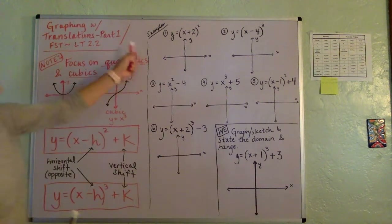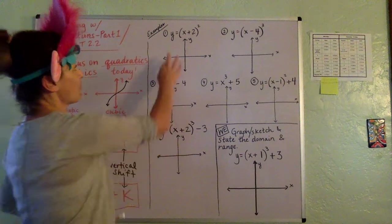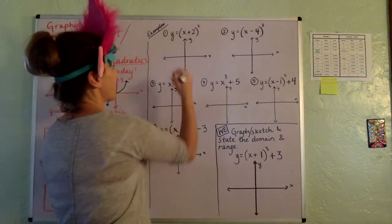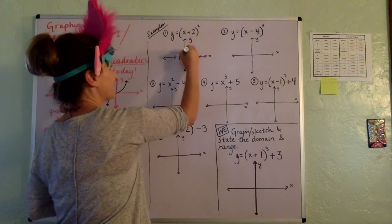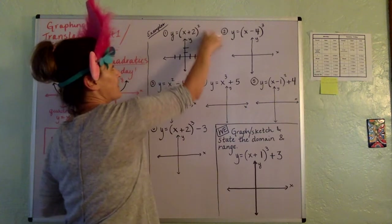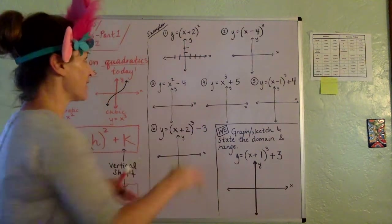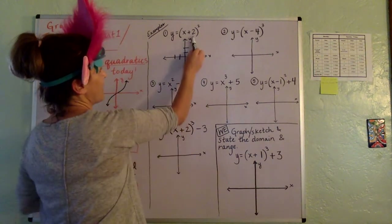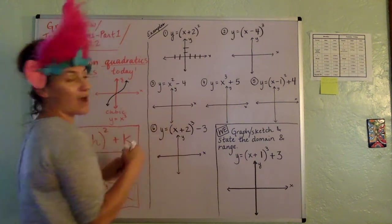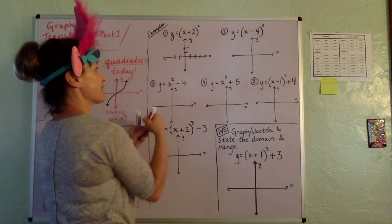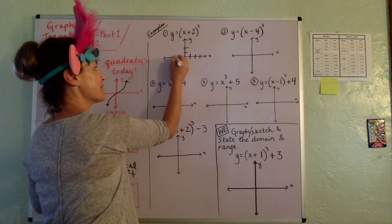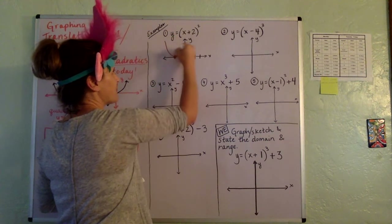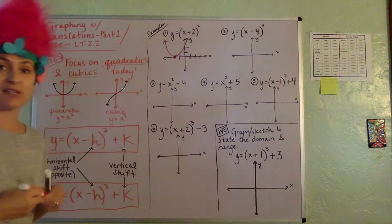Let's start taking a look. First one: y equals x plus 2, the quantity squared. So what this means is we have a horizontal shift going on, and there's nothing tacked on the end, so there's no vertical shift. This is x plus 2 quantity squared, which means it's a parabola — a U shape. We're going to slide it two units to the opposite of the way it says. So if it says plus 2, we slide the vertex over to negative 2. No vertical shift. And just a quick sketch looks like this.